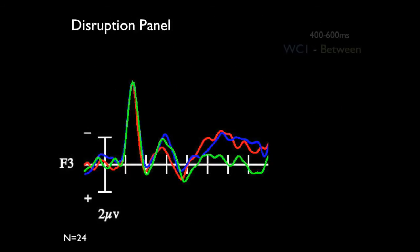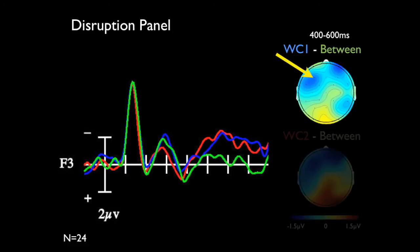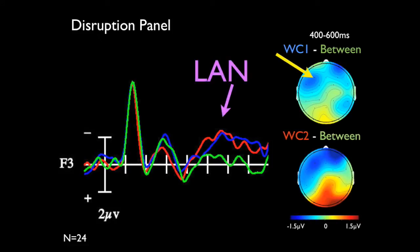When we looked at the brain response to the disruptions in our sequences, we found that a larger negativity appeared to the disruptions within groupings than those between groupings. This effect had a left anterior distribution on the scalp.